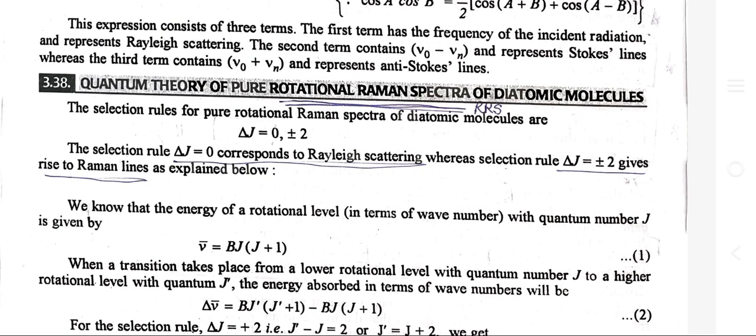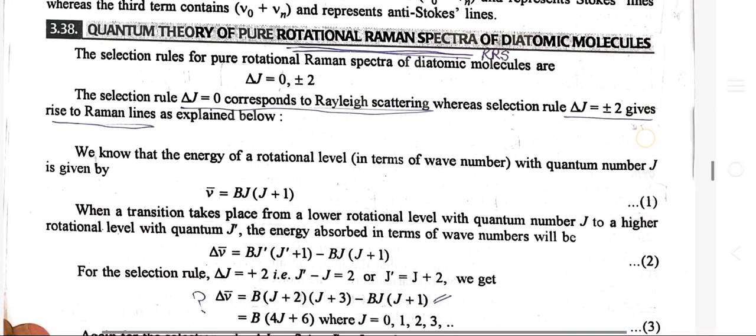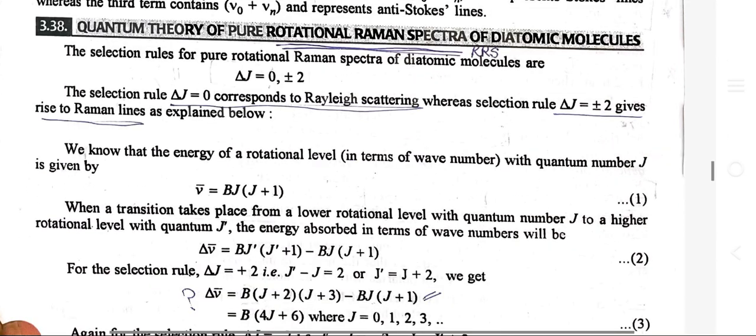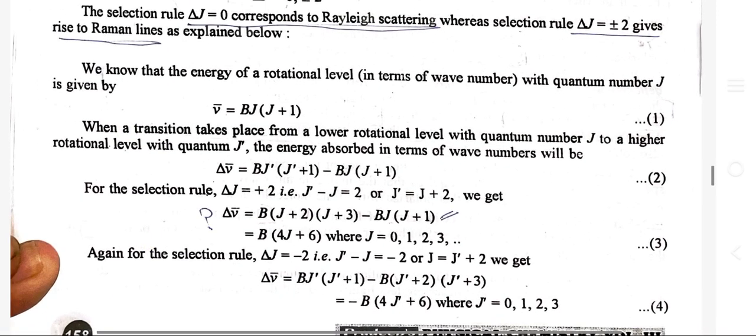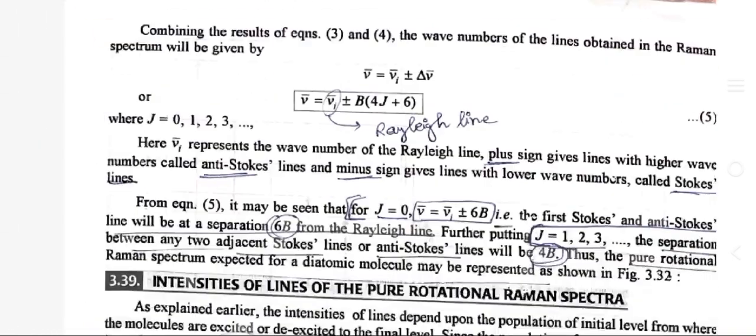Quantum theory of pure rotational Raman spectra of diatomic molecules: the selection rules for pure rotational Raman spectra of diatomic molecules are ΔJ = 0 or ±2. The selection rule ΔJ = 0 corresponds to Rayleigh scattering, whereas ΔJ = ±2 gives rise to Raman lines. The energy of a rotational level in terms of wave number with quantum number J is given by μ̄ = BJ(J+1). When a transition takes place from a lower rotational level J to a higher level J', the energy absorbed in terms of wave number is given by the corresponding formula.